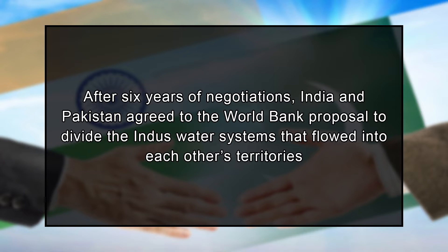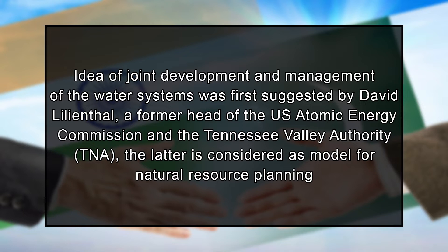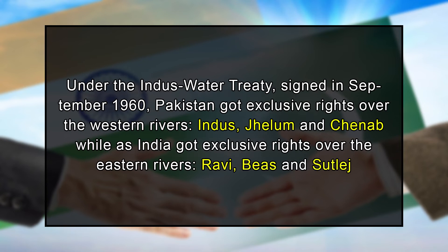Another instance of bilateral cooperation came a decade later. After six years of negotiations, India and Pakistan agreed to a World Bank proposal to divide the Indus water systems. The idea of joint development was first suggested by David Lilienthal, a former head of the US Atomic Energy Commission and the Tennessee Valley Authority. Under the Indus Water Treaty signed in September 1960, Pakistan got exclusive rights over the western rivers — Indus, Jhelum, and Chenab — while India got exclusive rights over the eastern rivers — Ravi, Beas, and Sutlej.